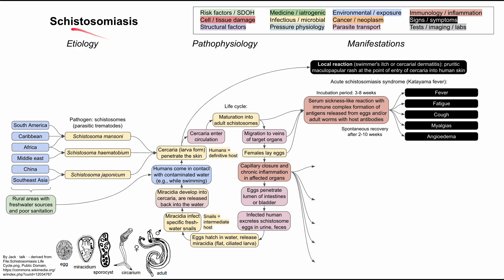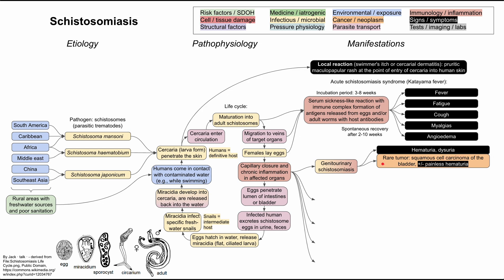The other major manifestations depend on the organ system affected by the eggs. Genitourinary schistosomiasis causes hematuria and dysuria. It can also cause a rare tumor — squamous cell carcinoma of the bladder — which can present with painless hematuria. In women, granulomatous inflammation in the ovaries, fallopian tubes, cervix, and vagina can lead to infertility. In men, the reproductive tract is not significantly affected. Bladder neck obstruction can also lead to hydronephrosis with associated pain over the kidneys.